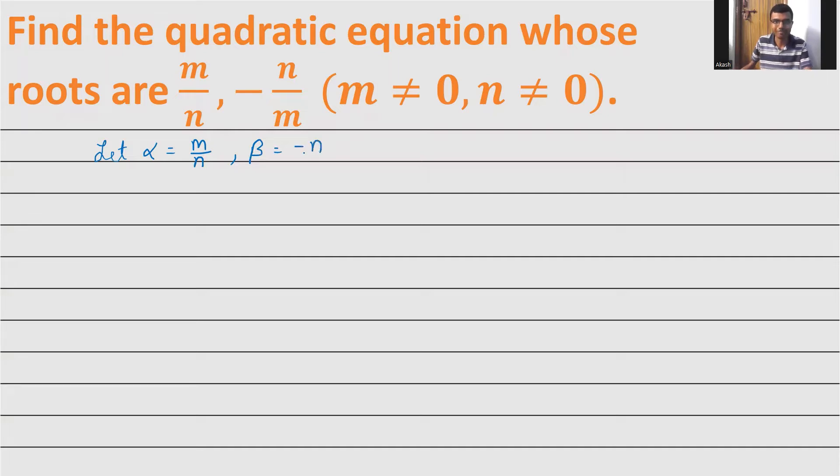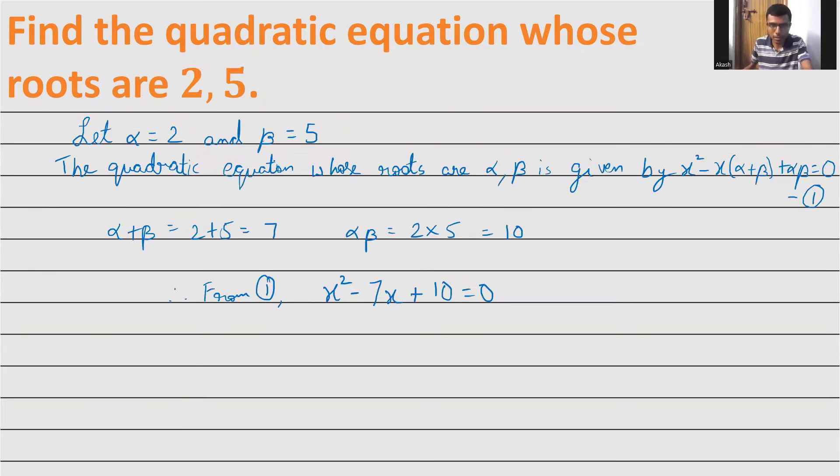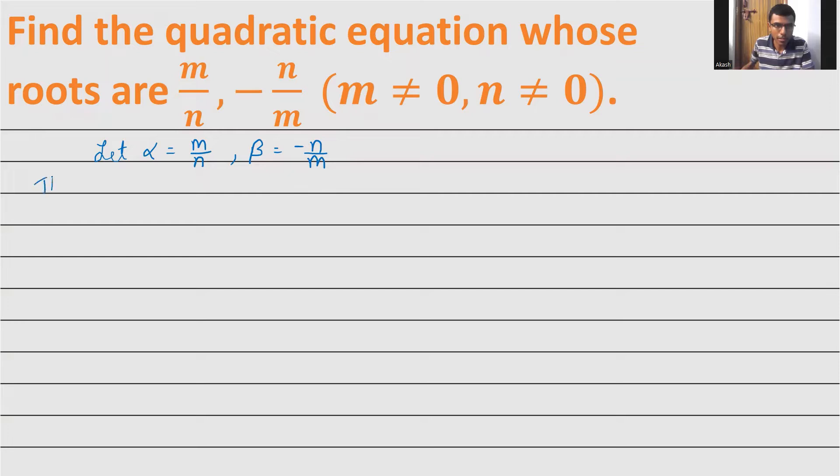The statement I gave in the previous class: the quadratic equation whose roots are alpha and beta is x² minus x times (alpha plus beta) plus alpha beta equals zero.